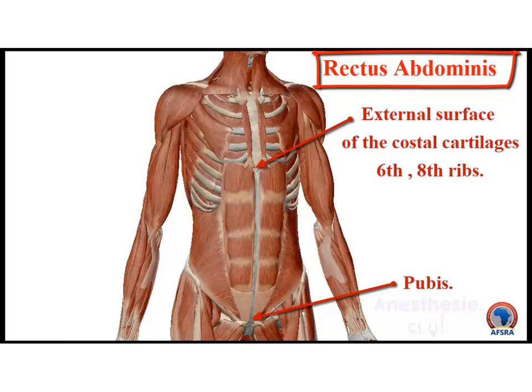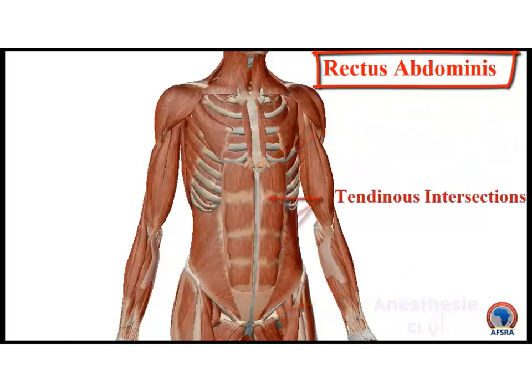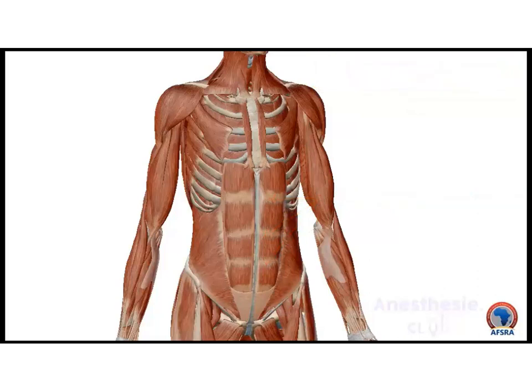In the medial abdominal wall, the rectus abdominis muscles lie on either side of the midline, attached inferiorly to the pubis and superiorly attached to the external surface of the costal cartilages of the sixth through eighth ribs. It contains a number of tendinous intersections which are responsible for creating the six-pack appearance of the abdominal wall.